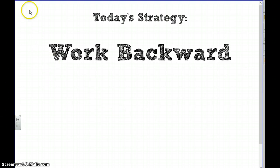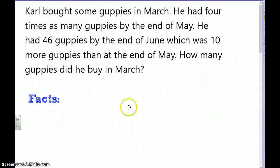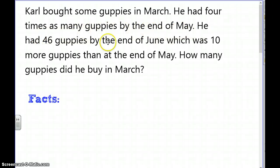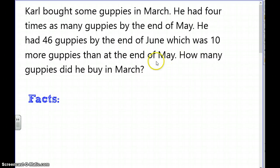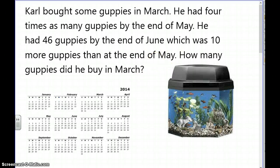Here's our problem: Carl bought some guppies in March. He had four times as many guppies by the end of May. He had 46 guppies by the end of June, which was ten more guppies than at the end of May. How many guppies did he buy in March?